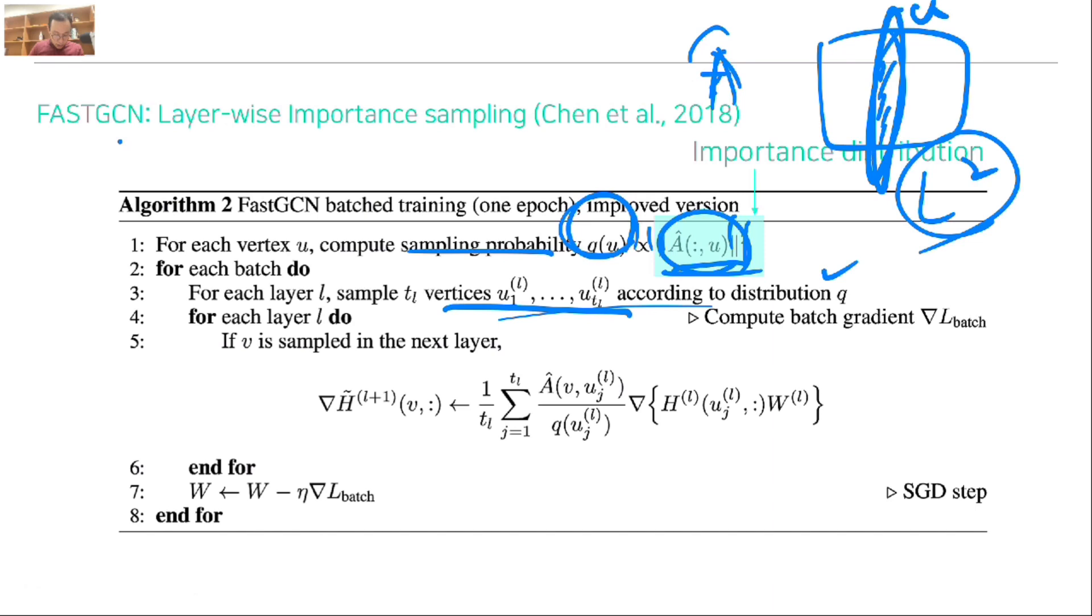The sampled nodes are considered for the neighbors to decide the representation of node V for the next layer. Instead of just summing the neighbors' representation, it is normalized using the actual importance of the node. That is the key idea of Fast GCN: just sample from the importance distribution and collect the aggregation score. That is the key idea of Fast GCN layer-wise importance sampling.